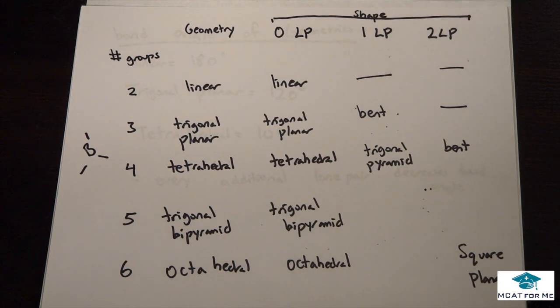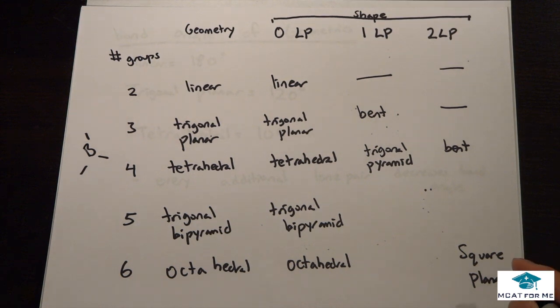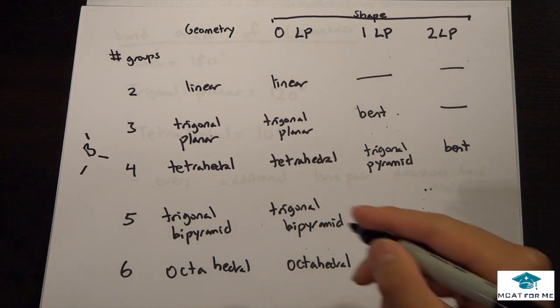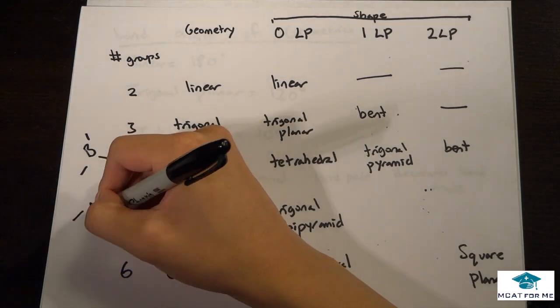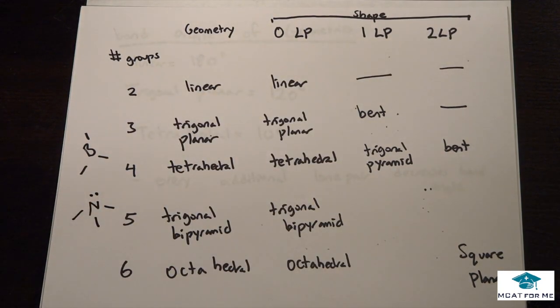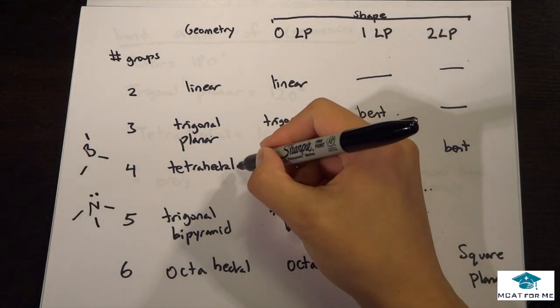But now let's think about this. What if we had something that had four groups around it but now it had one lone pair? So for example, like what we saw before, right?